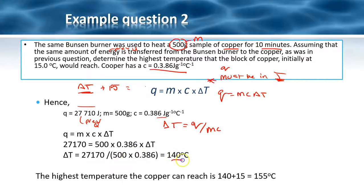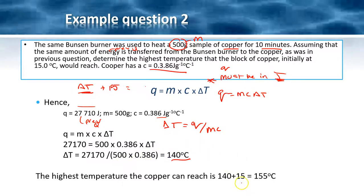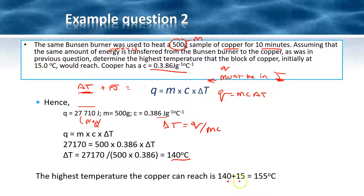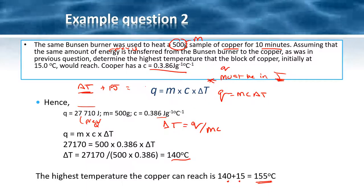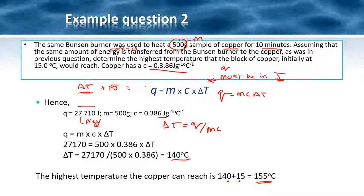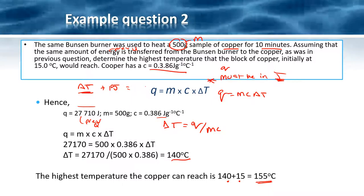When we rearrange, delta t is going to equal q divided by mc, and we will get 140 degrees. Remembering that it says the final temperature, we're going to take our initial temperature, add our change in temperature to get that the piece of copper will reach 155 degrees C, in contrast to the water which only reached 80.